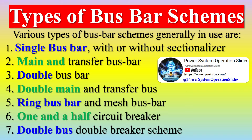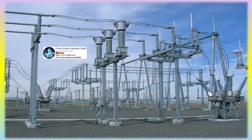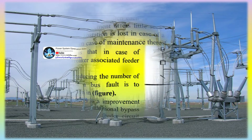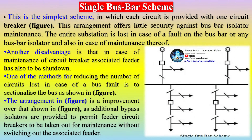The single busbar scheme is the simplest scheme, in which each circuit is provided with one circuit breaker. This arrangement offers little security against busbar isolator maintenance. The entire substation is lost in case of a fault on the busbar or any busbar isolator, and also in case of maintenance thereof. Another disadvantage is that in case of maintenance of the circuit breaker, the associated feeder has also to be shut down. One method for reducing the number of circuits lost in case of a bus fault is to sectionalize the buses.